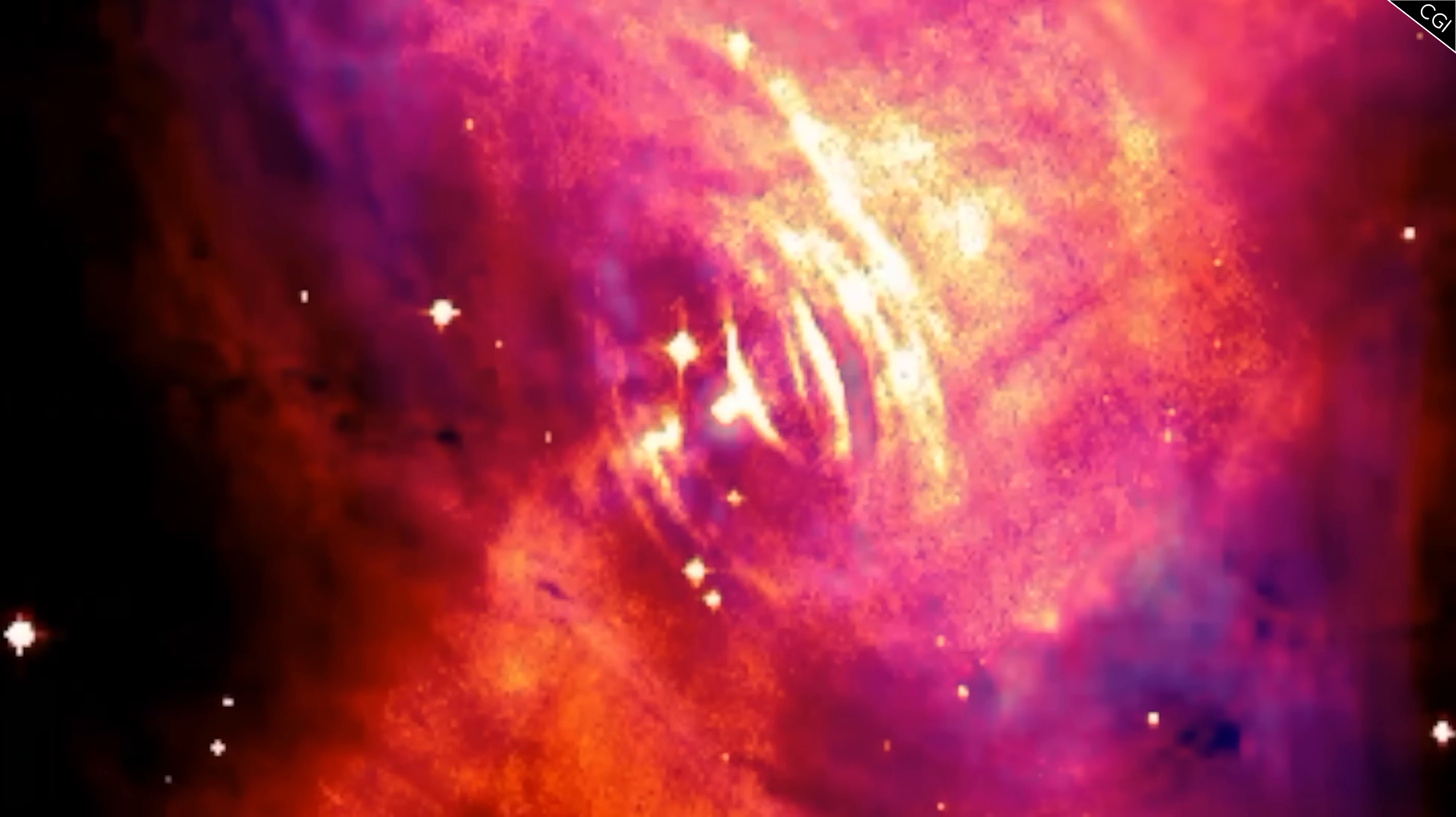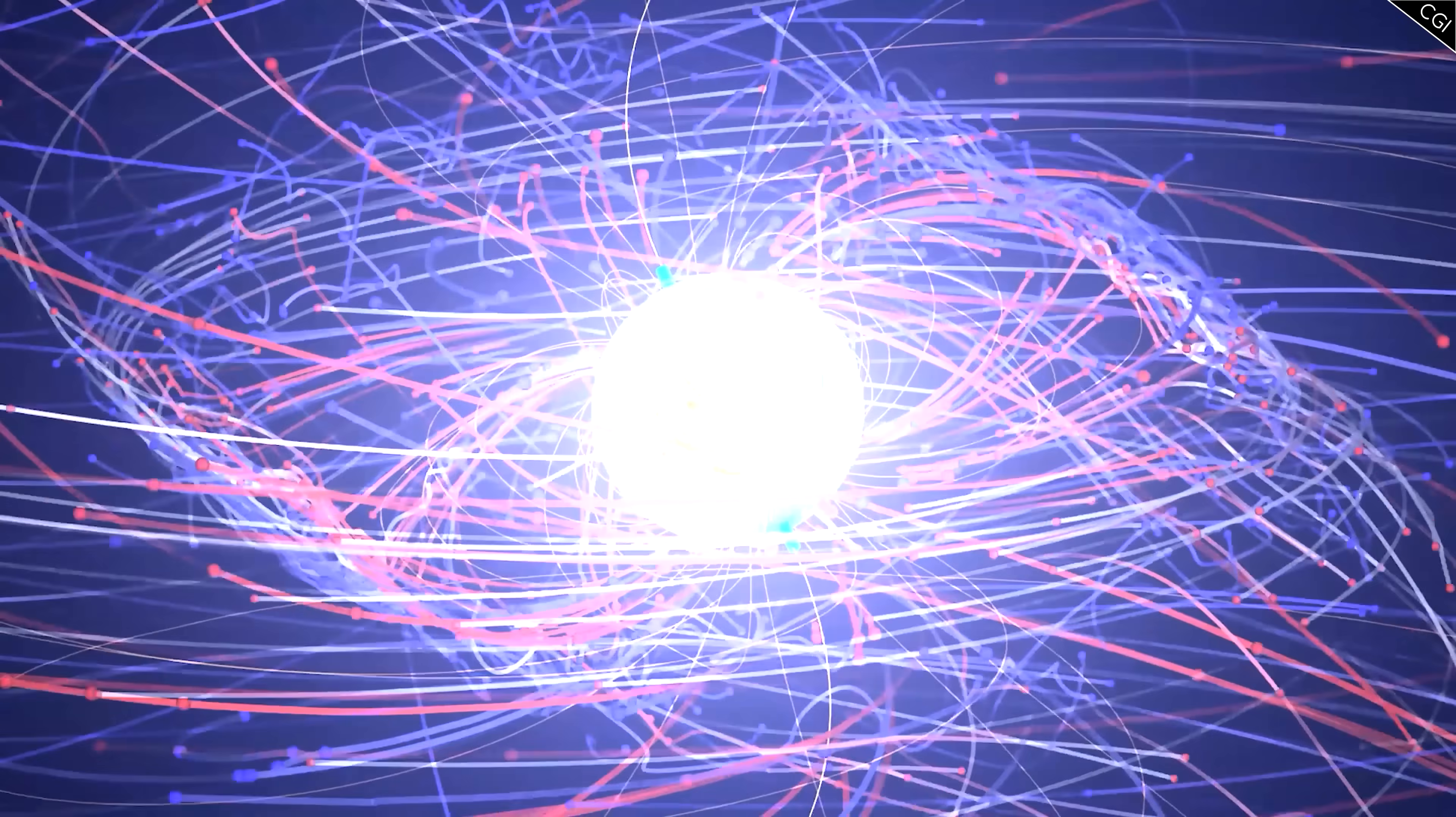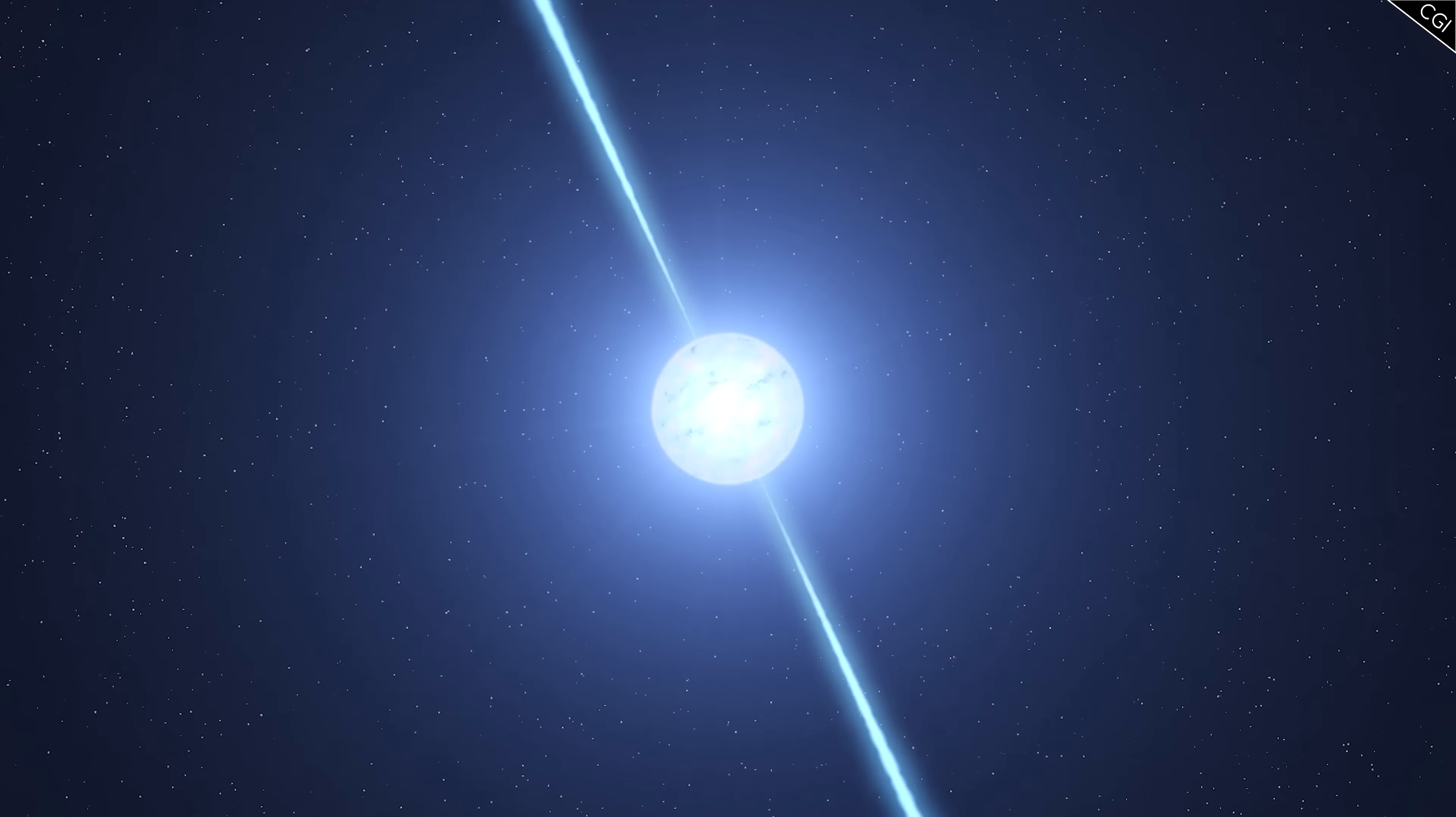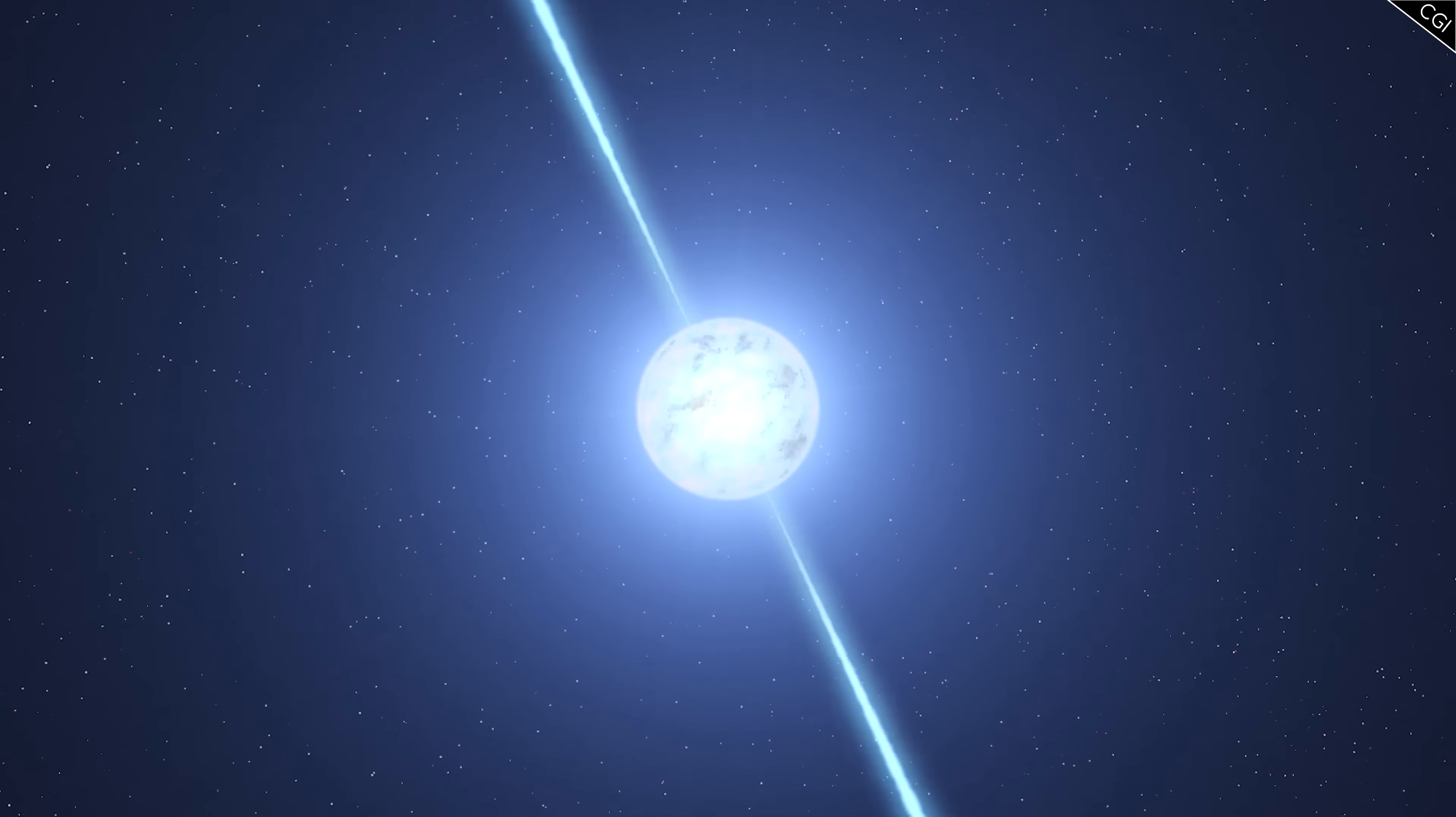These photons then beam out into space, while the original electron continues its journey generating more curvature photons and more cascades as it moves along the magnetic field lines. This pair-production cascade is why the light of a pulsar is so intense that we can detect a signal from this tiny stellar remnant thousands of light years away.